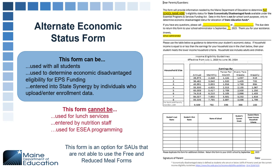The alternate economic status form has an updated version this year. We've tried to remove as much reference to the lunch form as possible, since it is separate from that. It is used for EPS funding purposes and can be used with all students, whether you're participating in CEP, special provision 2, or not.